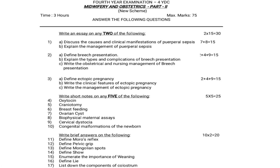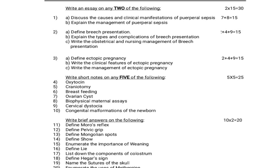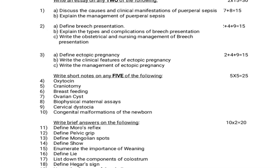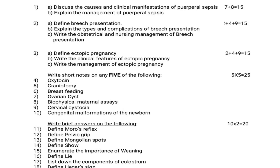The first section is the essay section. Write an essay on any 2 of the following; 2 into 15 equals 30 marks. They will give 3 questions and you have to answer only 2. Question 1a: Discuss the causes and clinical manifestations of puerperal sepsis, which is 7 marks. Question 1b: Explain the management of puerperal sepsis, which is 8 marks. So 1a and 1b together: 7 plus 8 equals 15 marks.